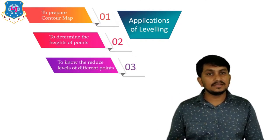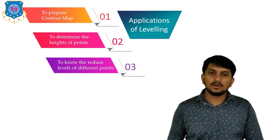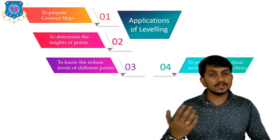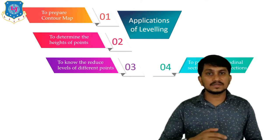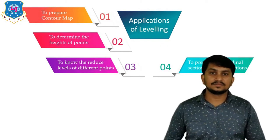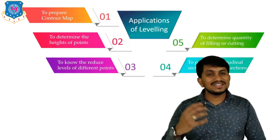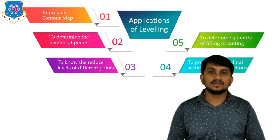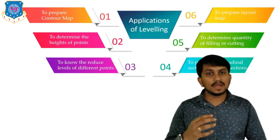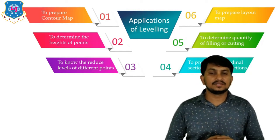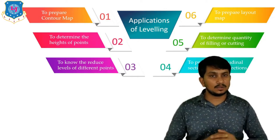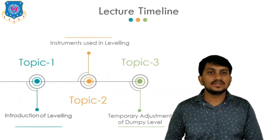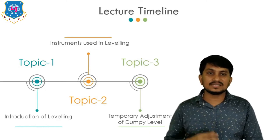Third is to calculate the reduced level of different points, which will be discussed in the next lecture. Fourth is to prepare longitudinal sections and cross-sections of roads, bridges, tunnels, or canals. Fifth is to determine the quantity of cutting or filling to level the surface in earthwork. Sixth is to prepare a layout map for water supply lines, drainage lines, etc.